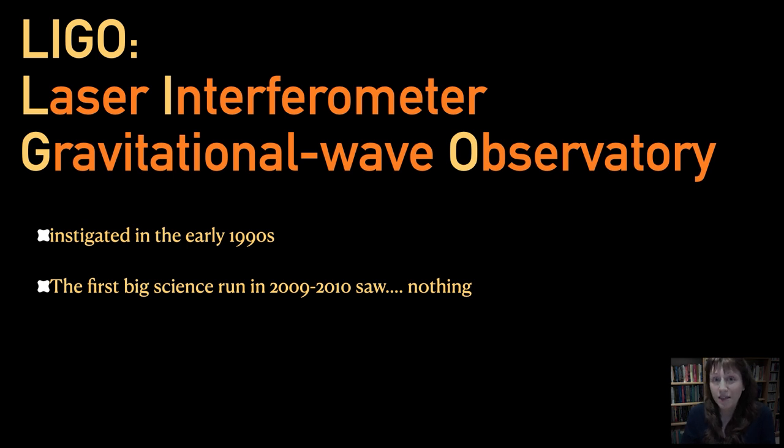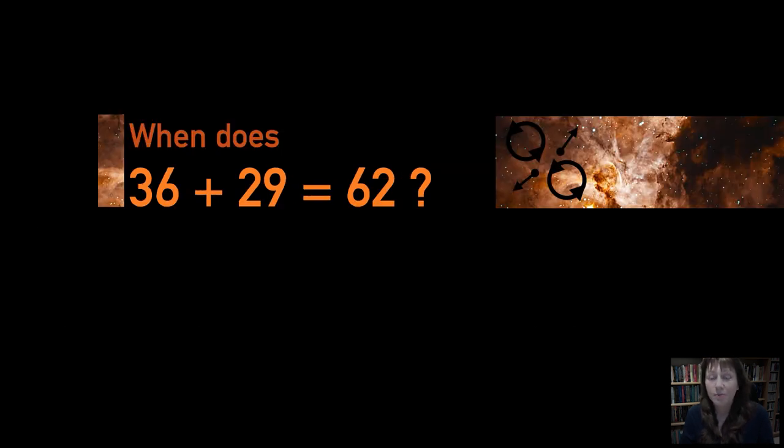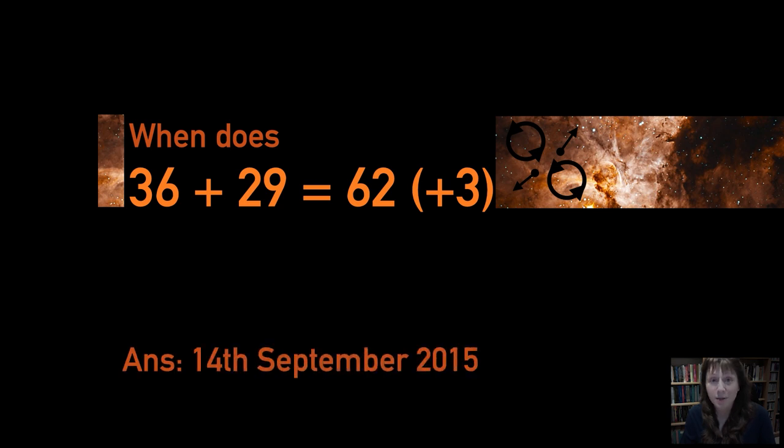Back to LIGO. The first big science run in 2009 to 2010 saw nothing. But then an advanced interferometer was installed at each site. And half a decade after that first big science run, a new experiment began in September 2015. And at this point, I want to ask a question. When does 36 plus 29 equal 62? The answer to this question is the 14th of September 2015. And the units of this equation are solar masses.